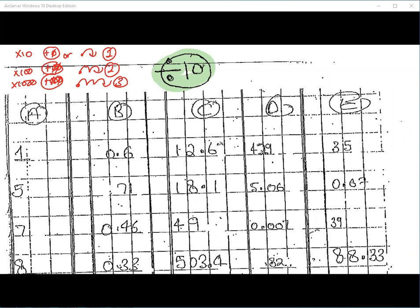In actual fact, when we're moving the decimal point to the right, the numbers are moving to the left. Moving the decimal point to the right is a trick way that we learn it, a quick shortcut — but in reality the numbers are moving to the left-hand side, and it appears as though the decimal point is moving to the right. Now, when we divide by 10, what do you think the rules are going to be?